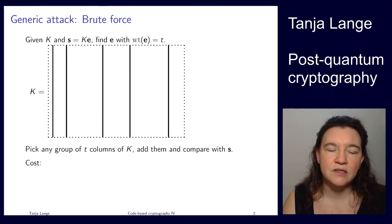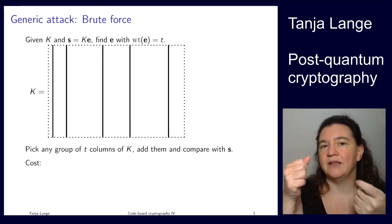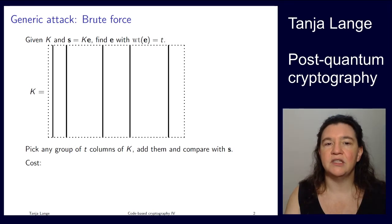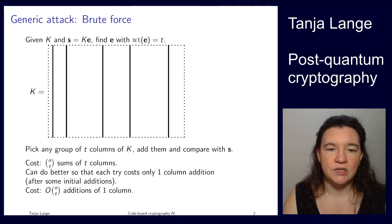We're looking at the setup for the Niederreiter system. We're given the public key, the parity check matrix K, and we're given a syndrome s. We know that the syndrome s comes from multiplying the parity check matrix by some error vector, where this error vector has weight exactly t. Eve could be trying out how to find this e. The brute force approach would be to pick basically t columns at random and test whether those sum up to the syndrome s.